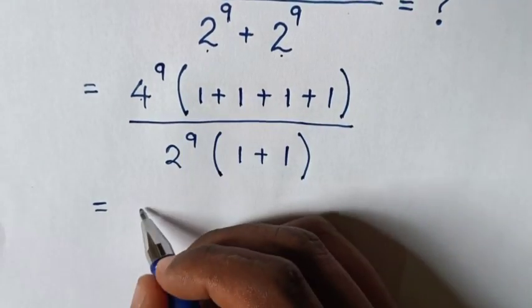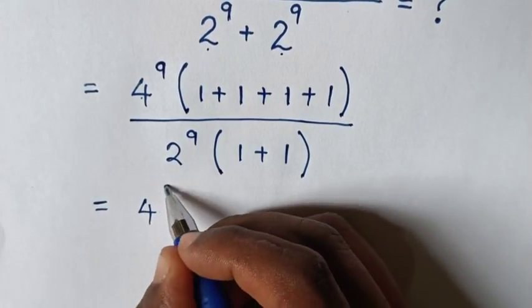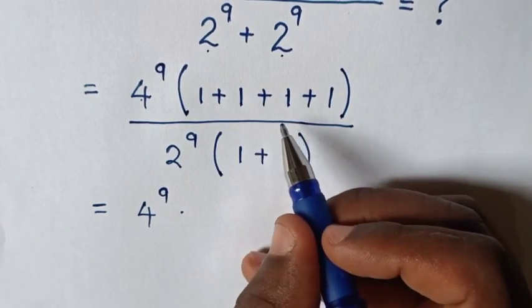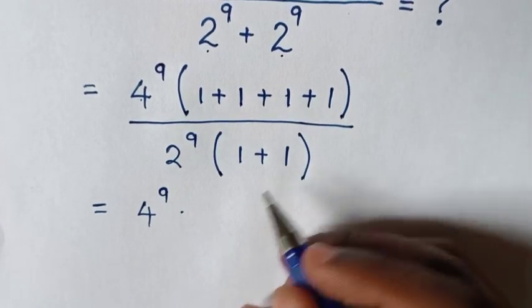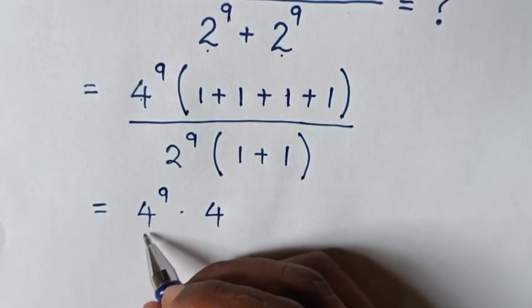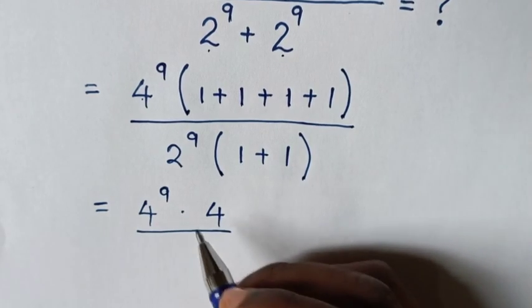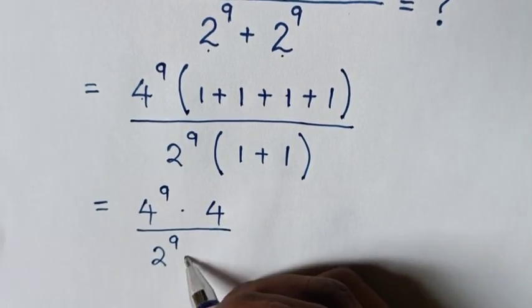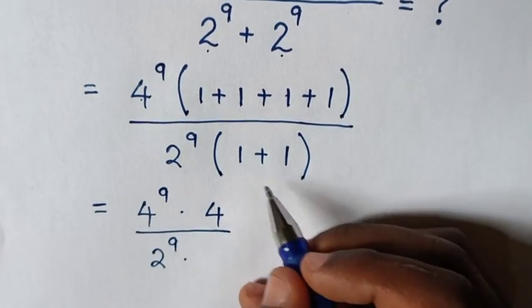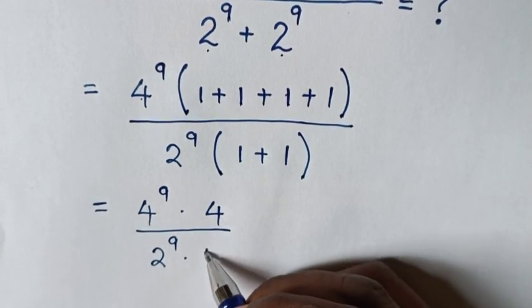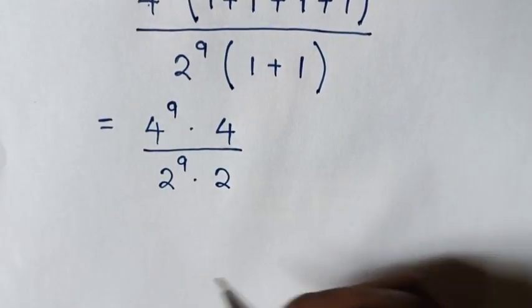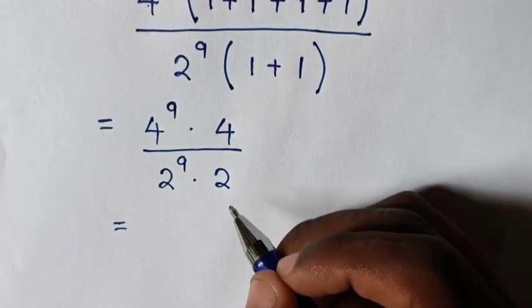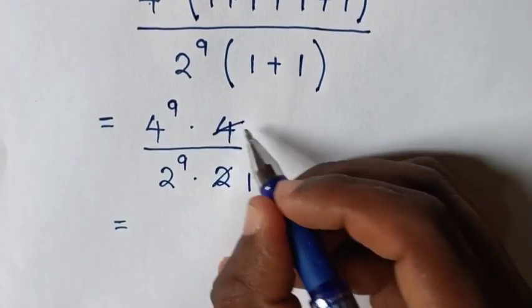4 power 9 times the sum of 1 plus 1 plus 1 plus 1, which is 4. Then over 2 power 9 times the sum of 1 plus 1, which is 2.